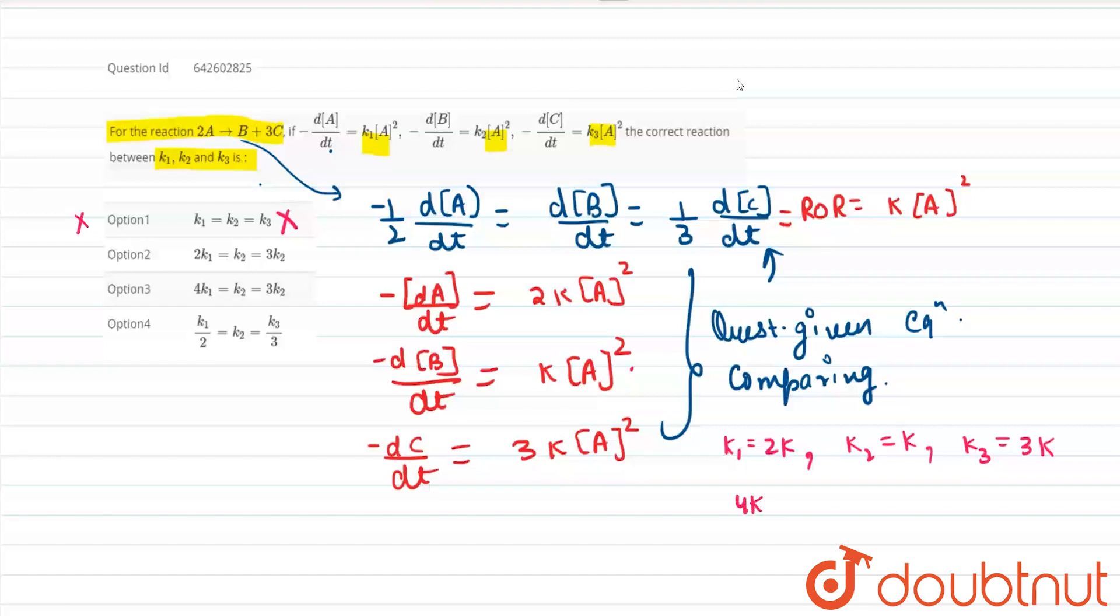For option number 2 it will be 4k equals to k2. K2 it is equals to k. It is equals to 3 times k3. 3 times k3 will be 9k. So this is again a wrong option. So option 2 is also wrong.